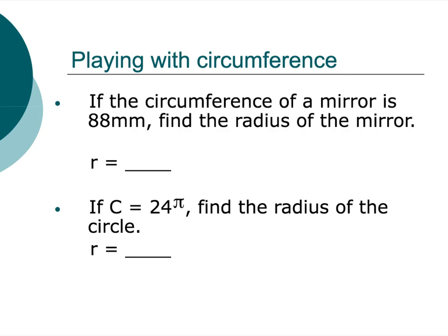Generally speaking, we are going to leave it in terms of π in honors geometry. Alright, playing with circumference. It's like a fun little thing you guys would do in your free time on the weekend. Not video games, not Fortnite, I'm going to play with circumference. So if my circumference is 2πr, and I know that the circumference is 88, what's the radius?